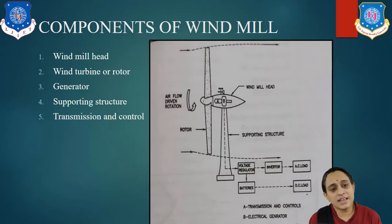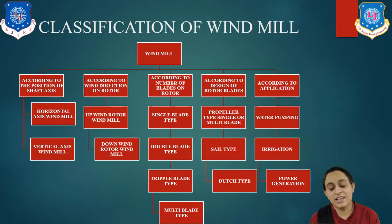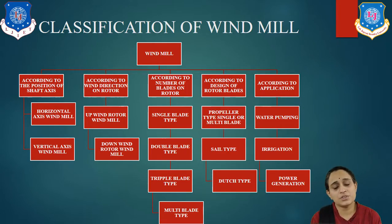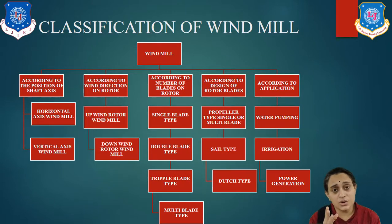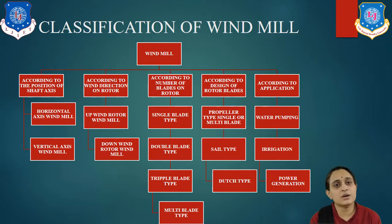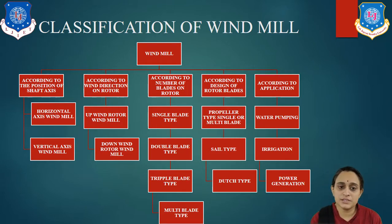Now let us look at the classification of windmills. As you can see, there are a number of different types. According to the position of the shaft axis, there are two types: horizontal and vertical. In horizontal there are six types, and in vertical there are two. The second classification is according to the wind direction of the rotor — meaning upwind rotor and downwind rotor. Third is according to the number of blades: single, double, triple, or multi.